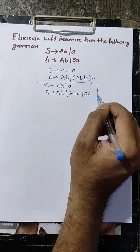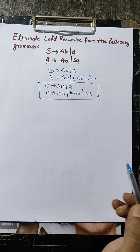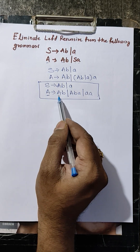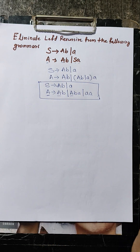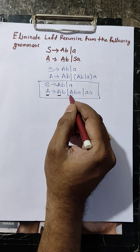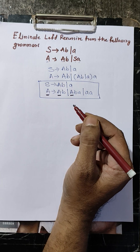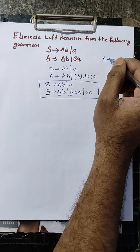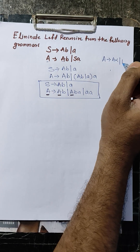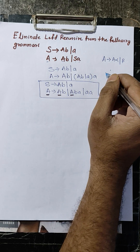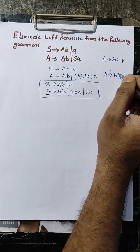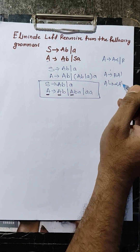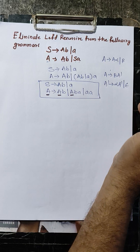From this grammar we can eliminate left recursion. This is A producing a symbol where the left side symbol and the first symbol on the right side are the same — this is called left recursion. To eliminate left recursion, use the formula: A produces A alpha | beta becomes A produces beta A' and A' produces alpha A' | epsilon.